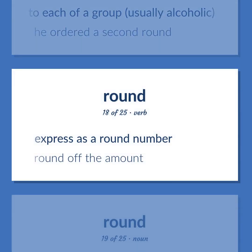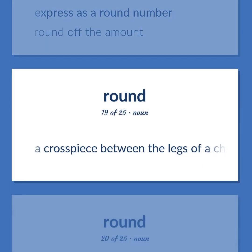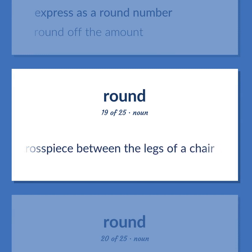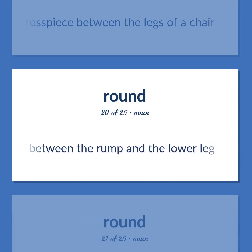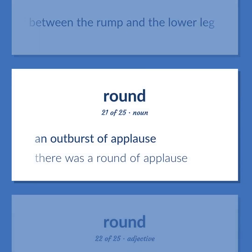To express as a round number. Example: Round off the amount. A crosspiece between the legs of a chair. A cut of beef between the rump and the lower leg. An outburst of applause. Example: There was a round of applause.